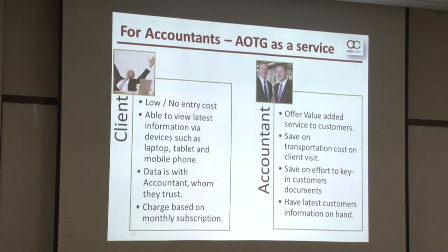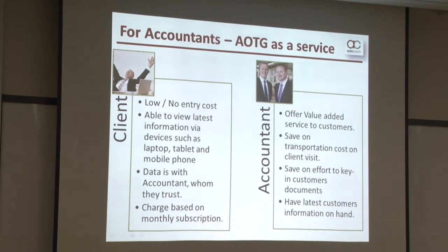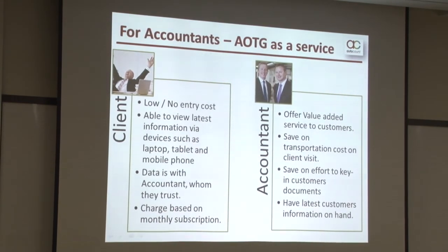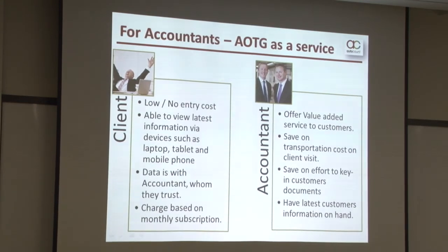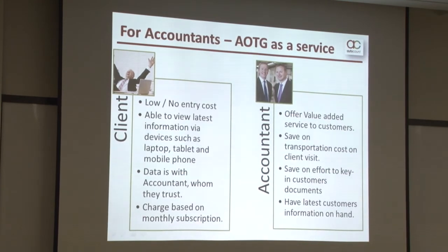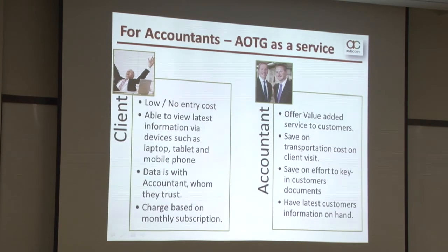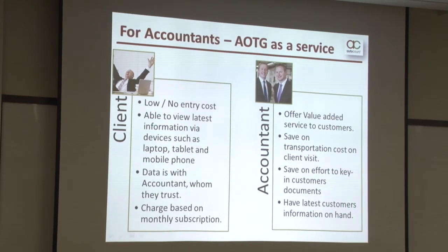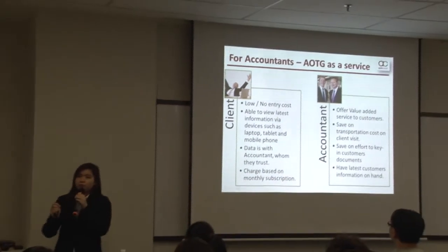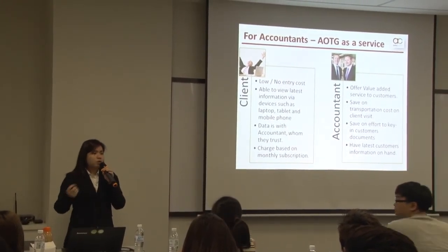AOTG is also a better option for light users. Some light users have a limited budget and may not be willing to buy another accounting software just to perform sales and purchases transactions. AOTG can help them — they can just subscribe to AOTG, which is much cheaper compared to buying accounting software, and they are able to perform sales and purchases transactions. AOTG is very suitable for these micro users.